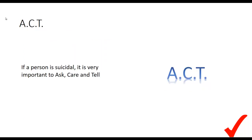We talked about the ACT acronym. If you believe a person is suicidal, it's very important to Ask — ask them what's going on. Care — communicate to them that you care about what's going on. And Tell somebody. A lot of times if somebody tells you something in confidence, you keep it — but this isn't one of those cases. You want to make sure you let somebody know who can help, because you might be the only person they've communicated that to. ACT is a good way to keep it simple when helping someone you think might be suicidal.